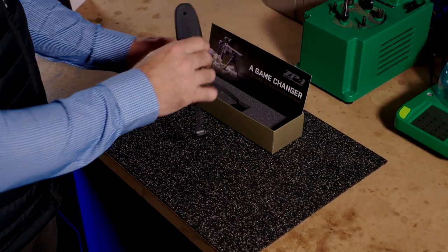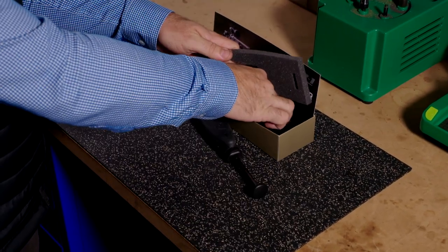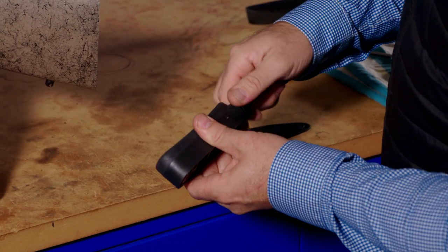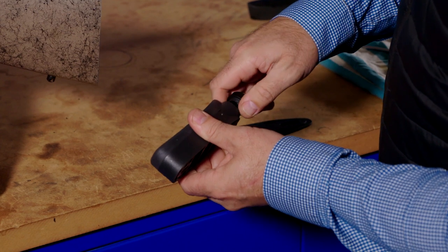Remove your ZP1 and adapter plate from packaging. With the damper leg extended, unscrew the ZP1 cap and remove the damper.